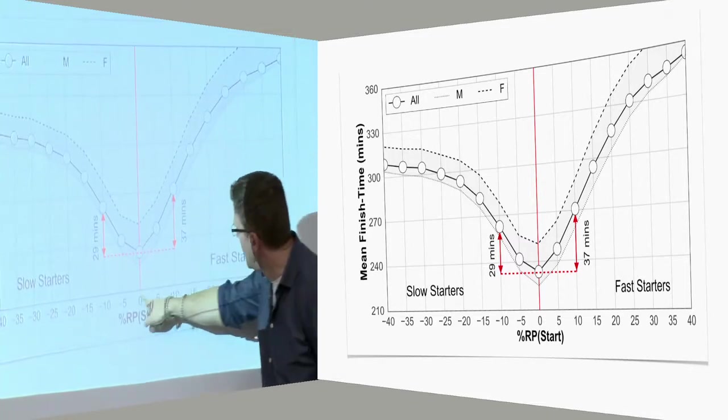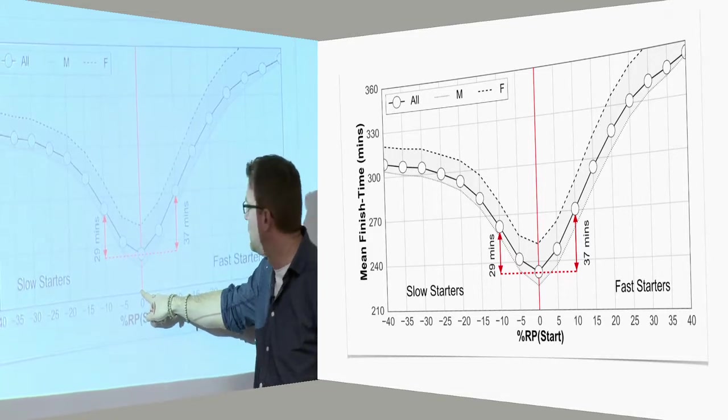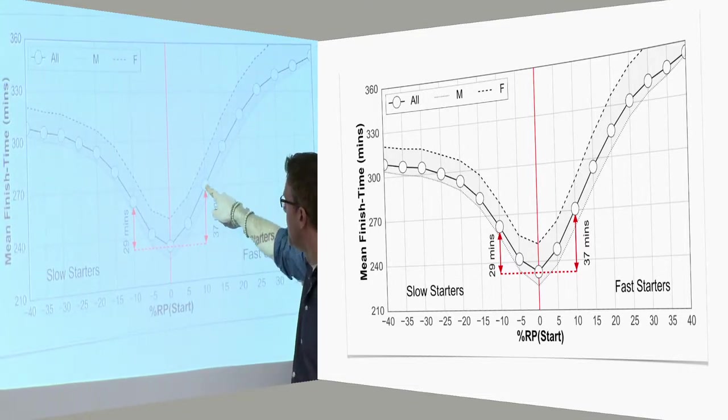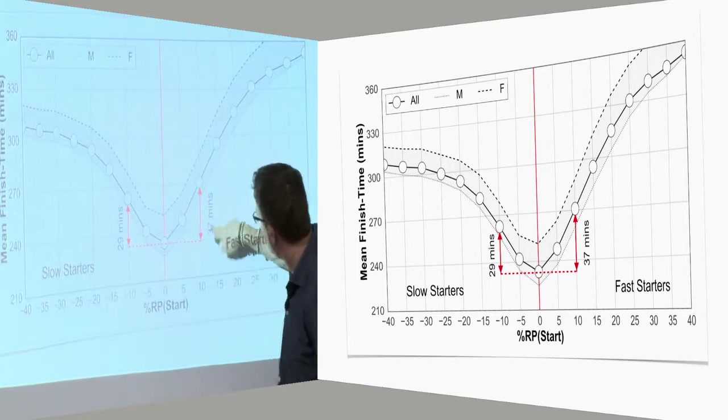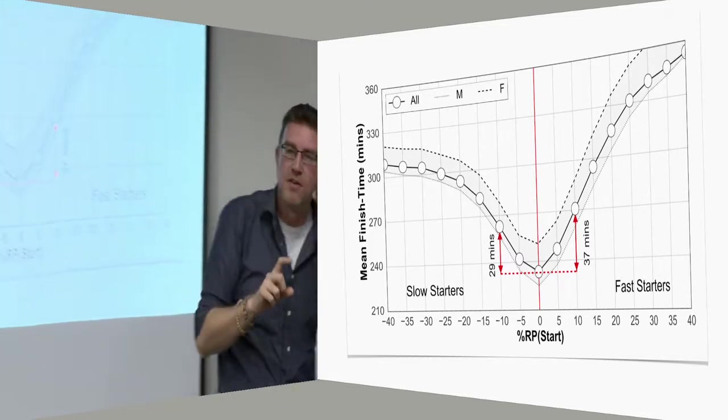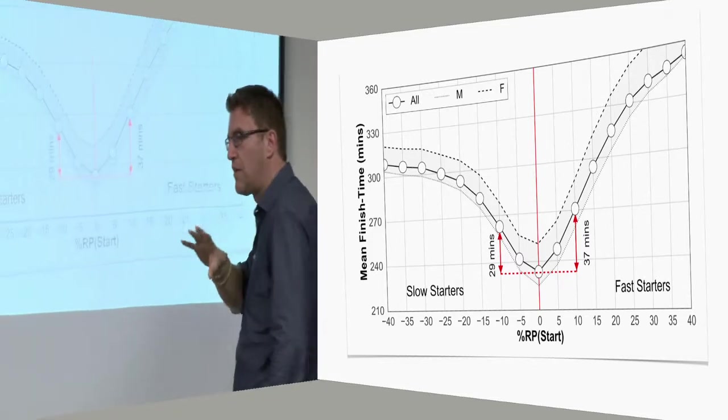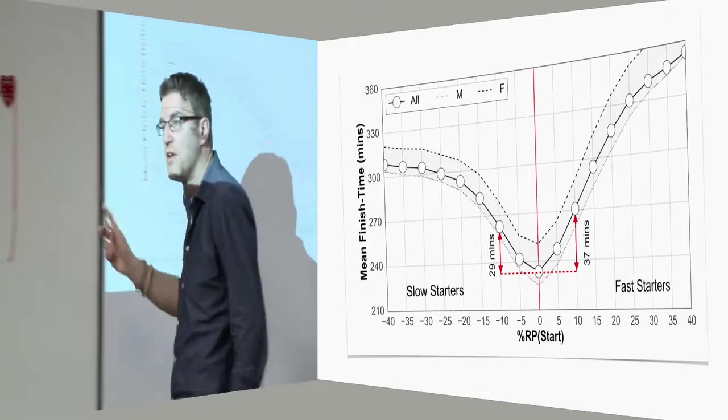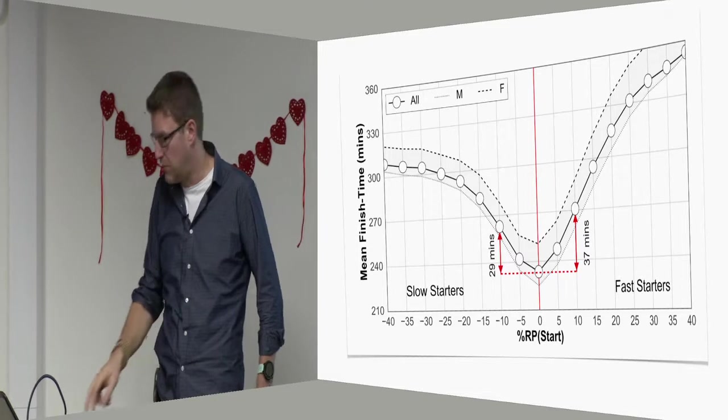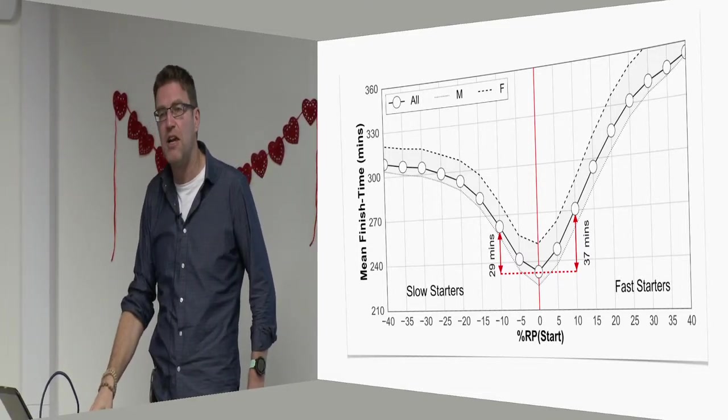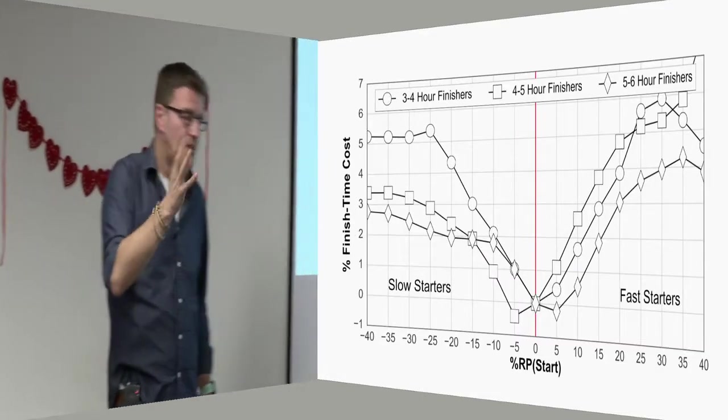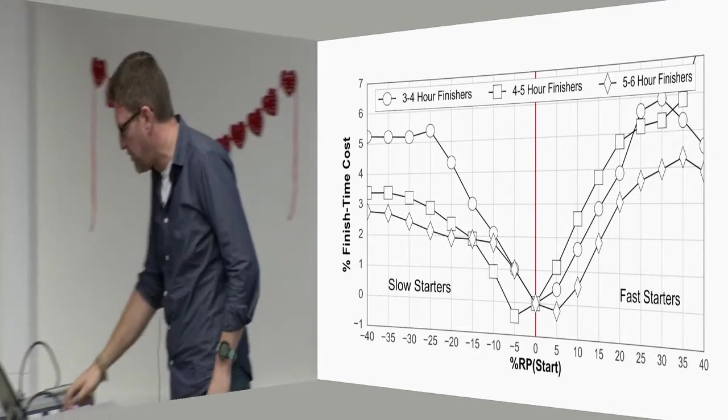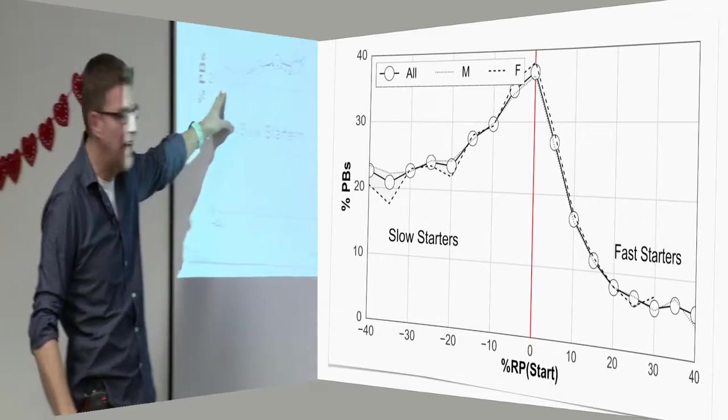What happens to those people who run faster or slower? Well we find that their average finish time increases the faster they start. So people who start at their average race pace finish on average just under four hours. People who start at 10% faster finish on average about four and a half hours. So there's over 30 minutes difference between people who finish or who start at their race pace and those who start a little faster. Similar difference for people who start too slowly as well. The faster you start the slower you finish essentially, and the slower you start the slower you finish as well. So you're best off starting at or near your average race pace. And that's correlation not necessarily causation, but we found the same effect when we stratified runners for different finish times.